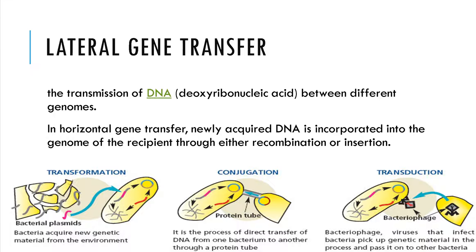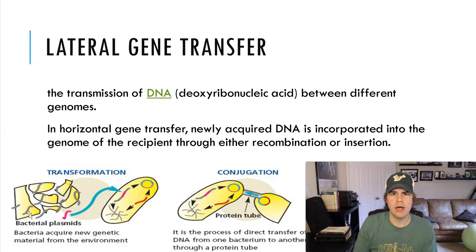The third source your book discusses is lateral gene transfer — DNA transferred laterally between different genomes, as opposed to vertically from parents to offspring down generations. Horizontal gene transfer includes transformation (picking up DNA from the environment — Griffith, Avery), conjugation (two bacteria combine and exchange genetic information, which is sometimes how antibiotic resistance develops), and transduction (involving a bacteriophage, a virus that infects bacteria).